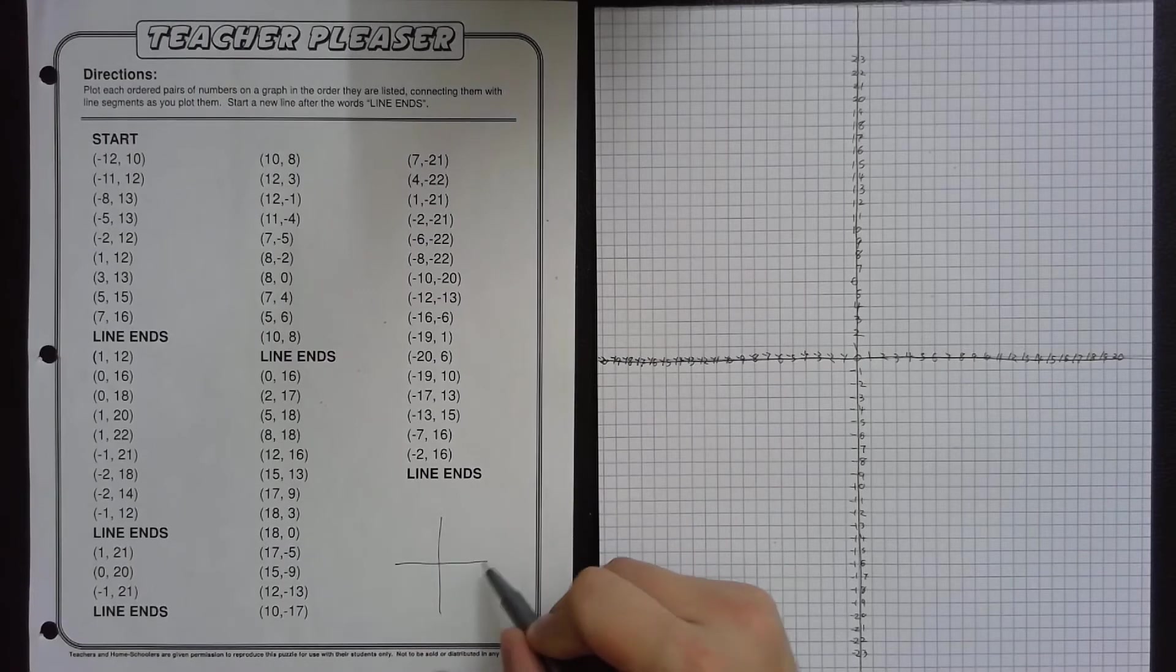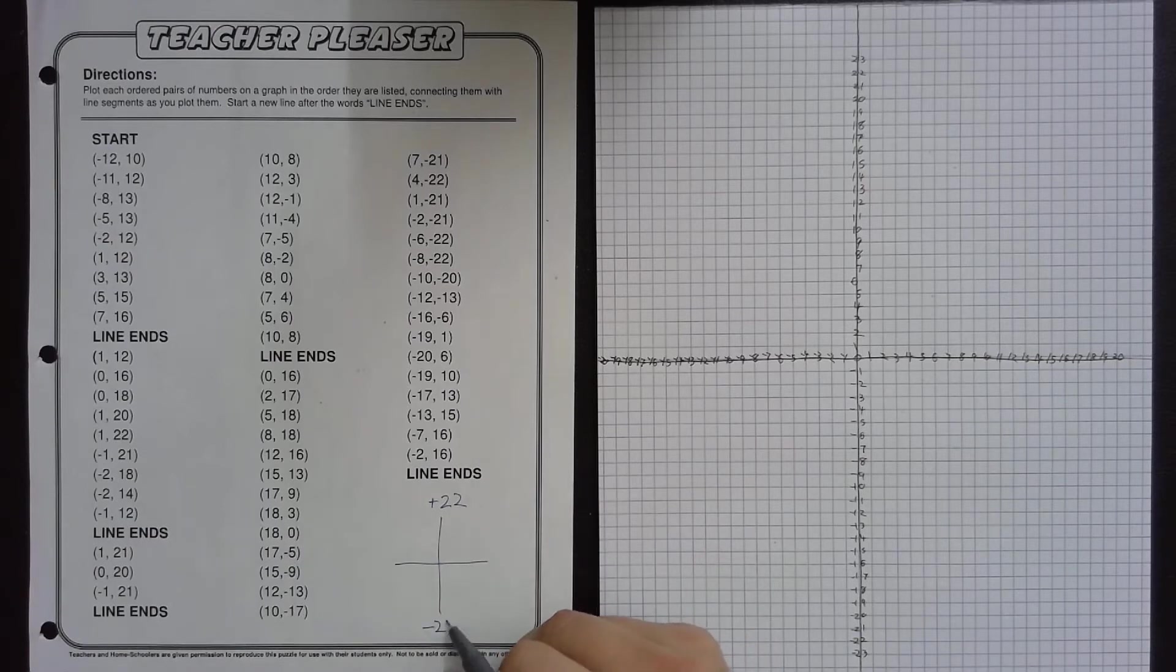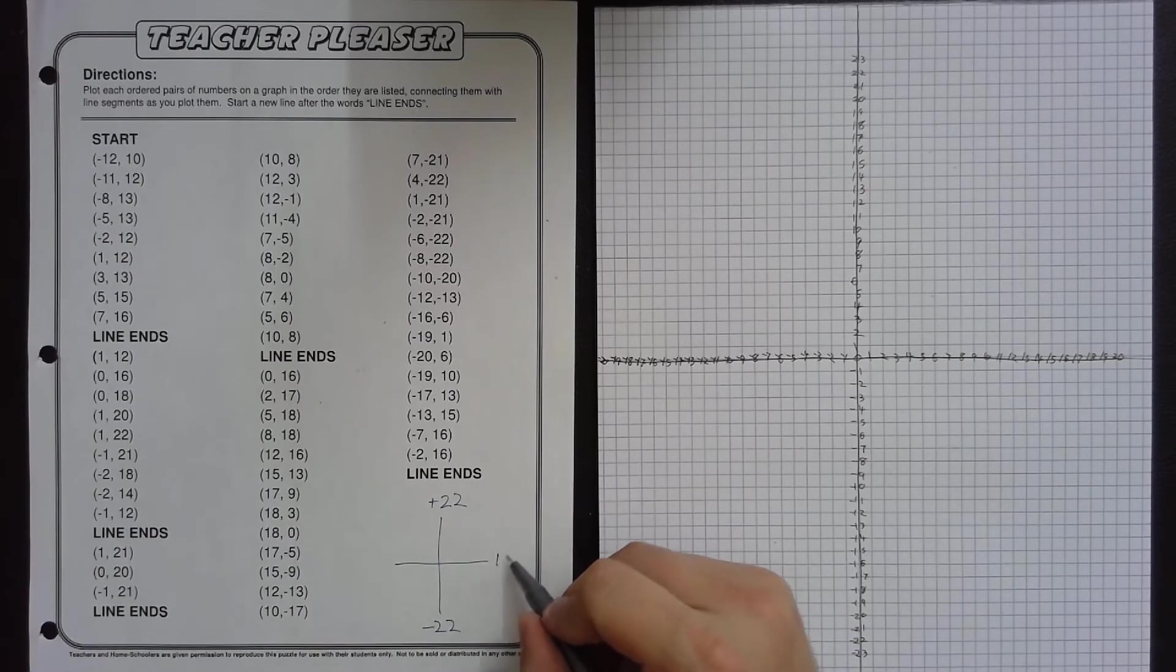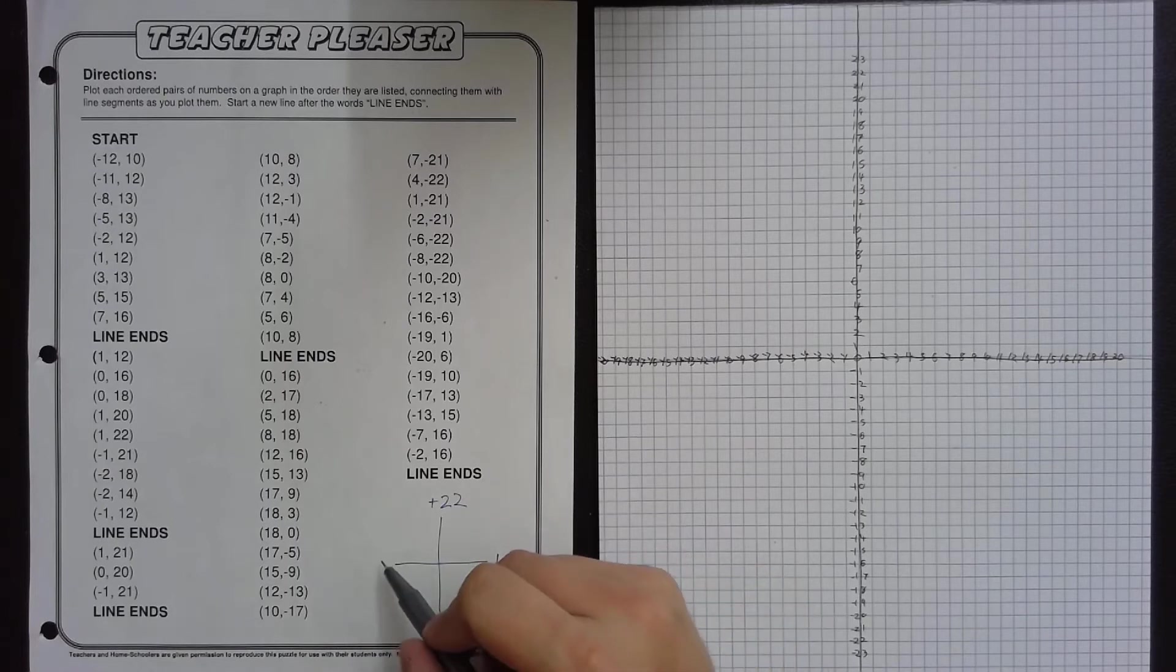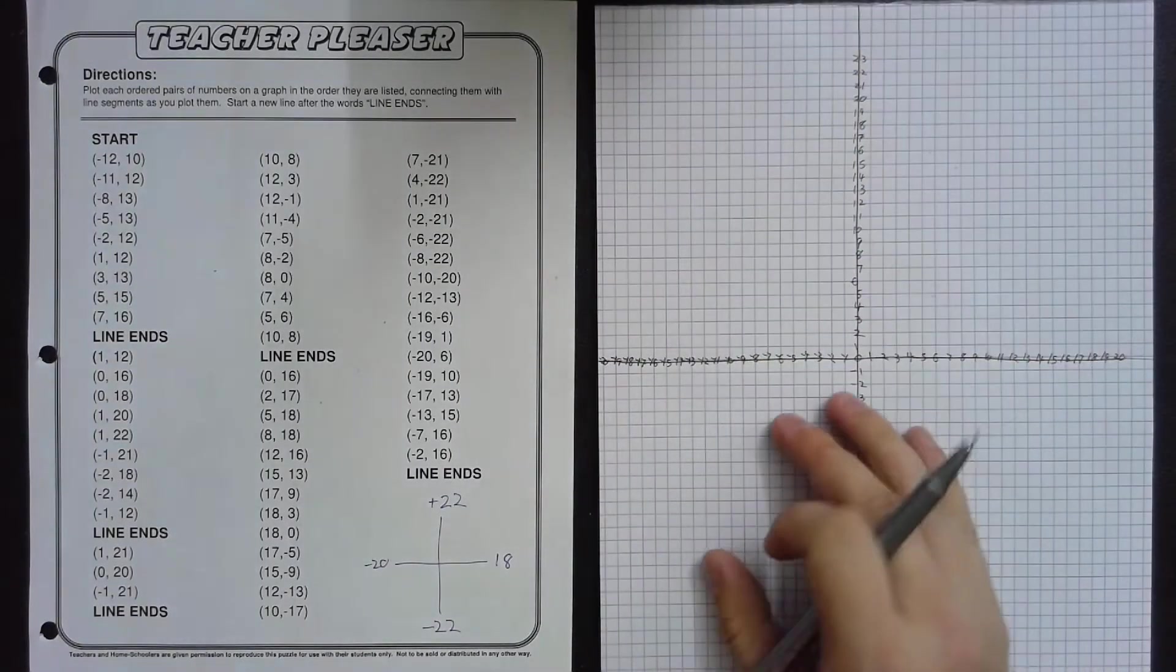One thing you'll need to know is that the tallest this graph will get will be 22, the lowest will be negative 22, farthest to the right will be positive 18, farthest to the left will be negative 20. And this kind of graph paper that has the cardboard back is the perfect size.